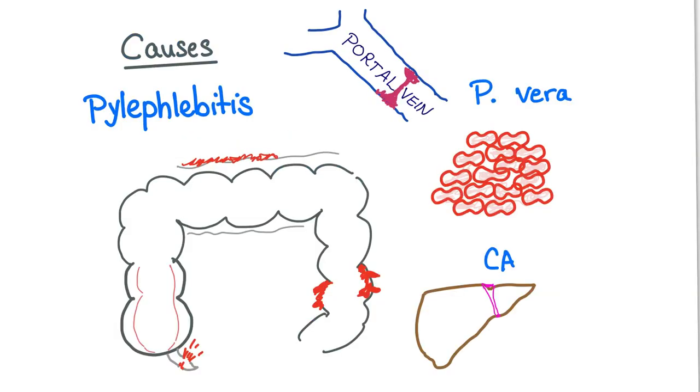Hepatic artery thrombosis was the previous video. Now let's talk about portal vein thrombosis. What are the causes? First, something called pylephlebitis. Pyle is the portal vein, phleb means vein, itis means inflammation. So it's inflammation of the portal vein - pylephlebitis.